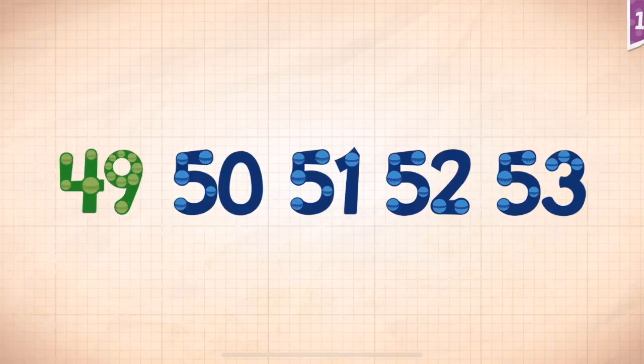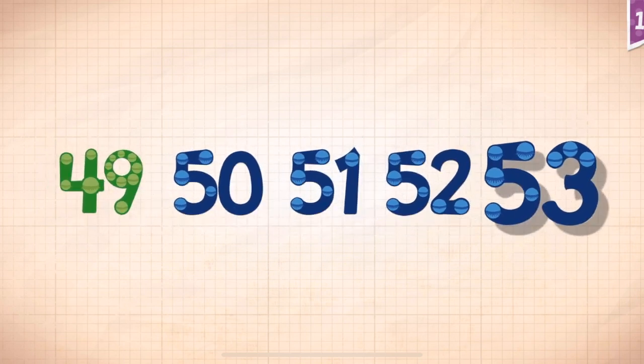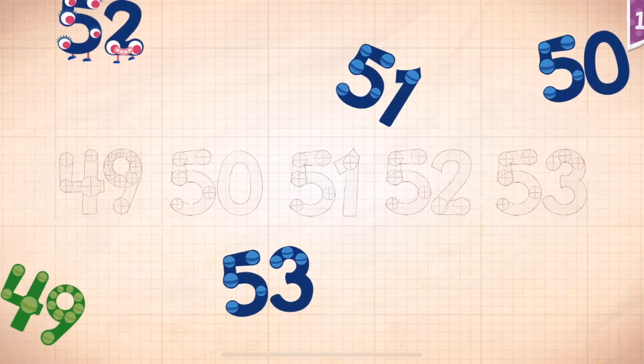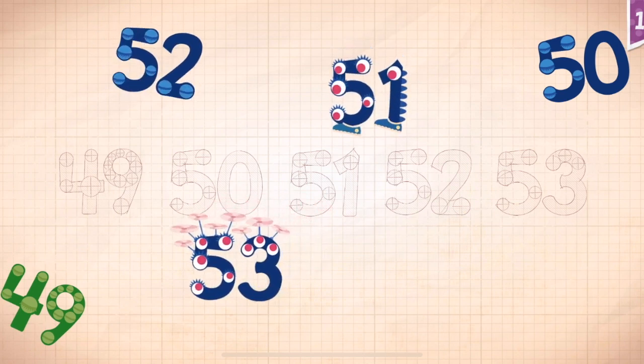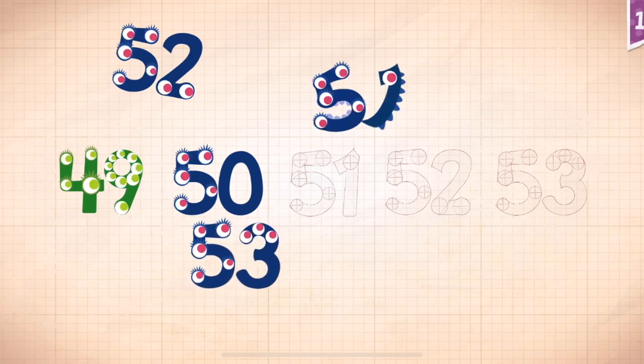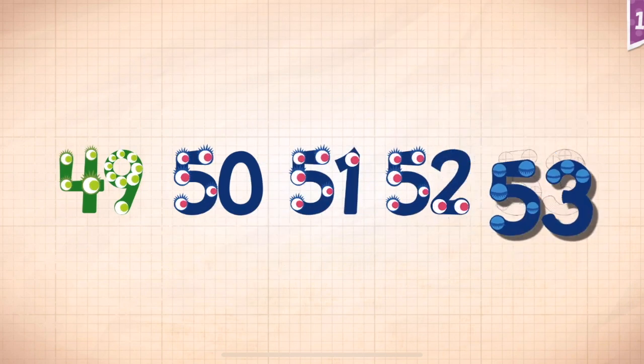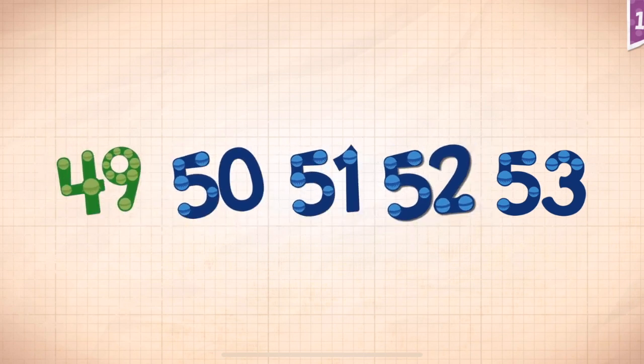Abby and Francis made a house using all 52 cards in the deck. Count by ones starting at 49: 49, 50, 51, 52, 53.